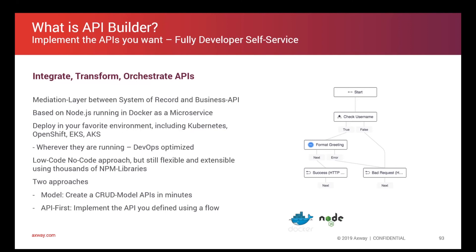The second is the API first approach, where you first create the API you want in an API design studio editor, then bring that API design into your API Builder project and implement the different API endpoints using the flexible flow concept. That should be the overview of API Builder.